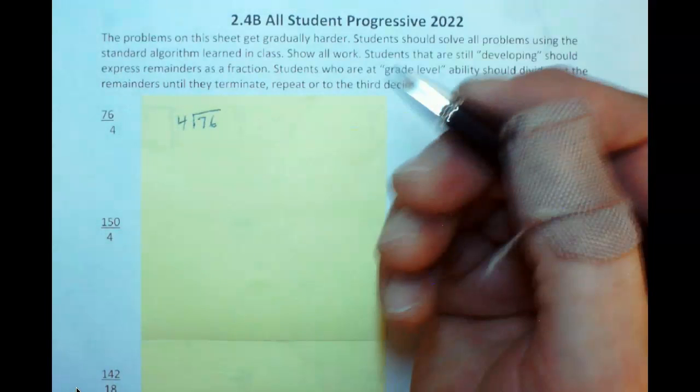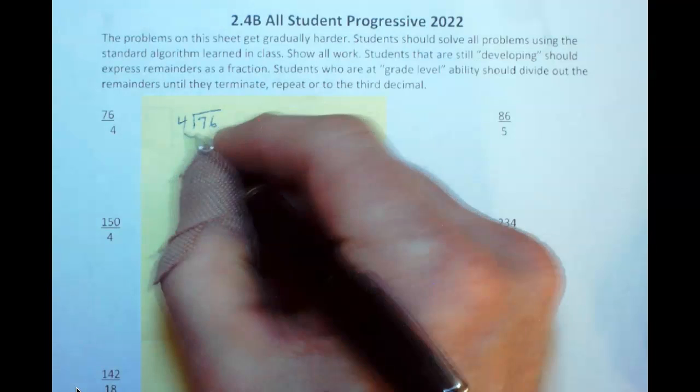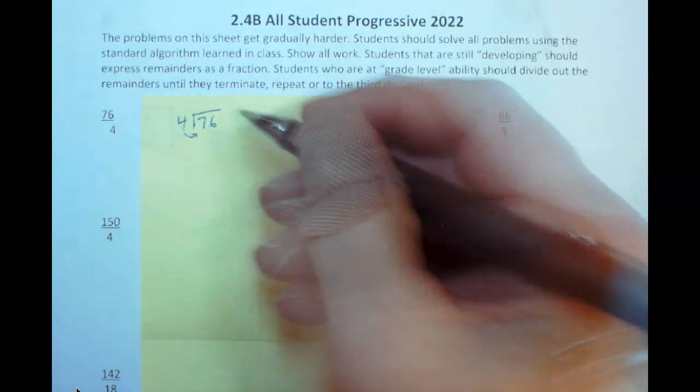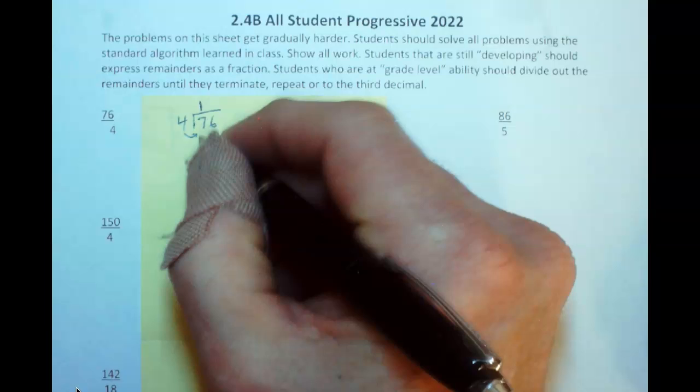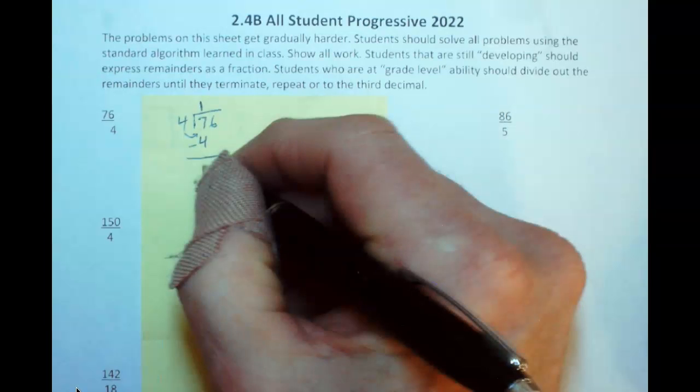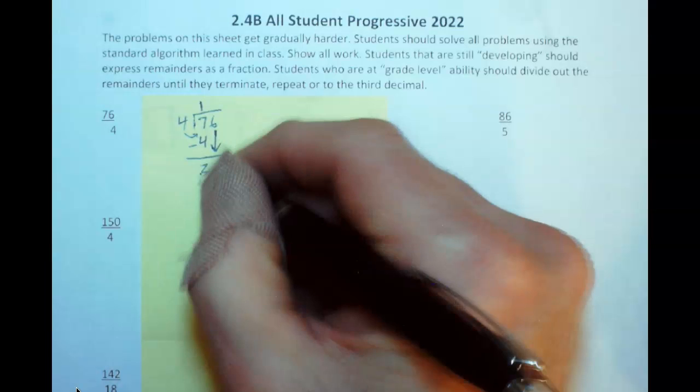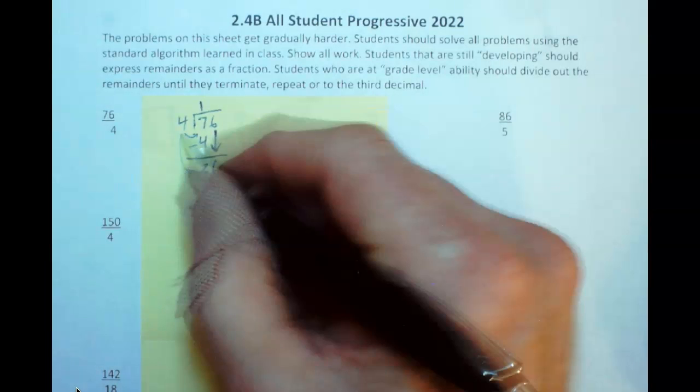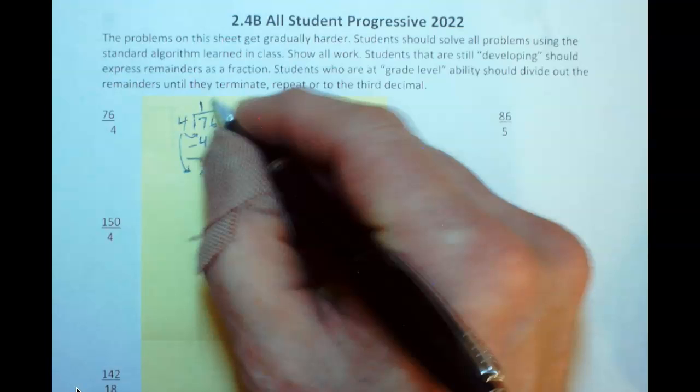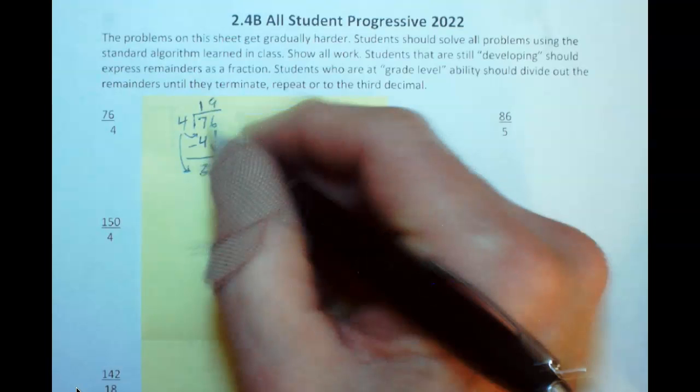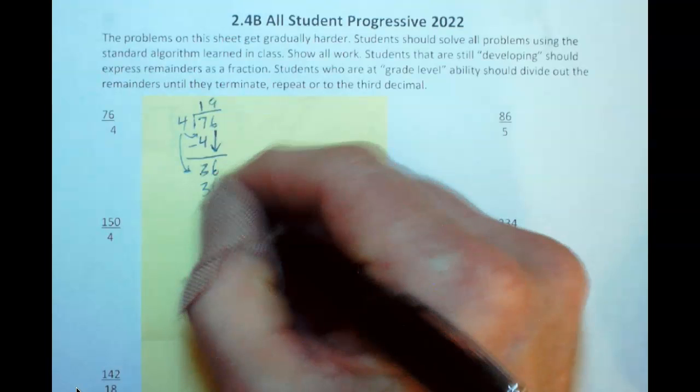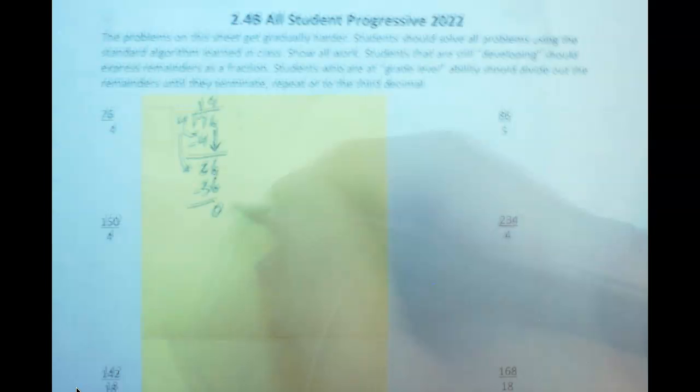Even if you know the answer, you still have to divide this out. 4 goes into 7, we'll go in there one time. 7 minus 4, this means a remainder of 3. Bring down that 6. 4 will go into 36, 9 times. 9 times 4 is 36. I can subtract that out and zero out the problem.